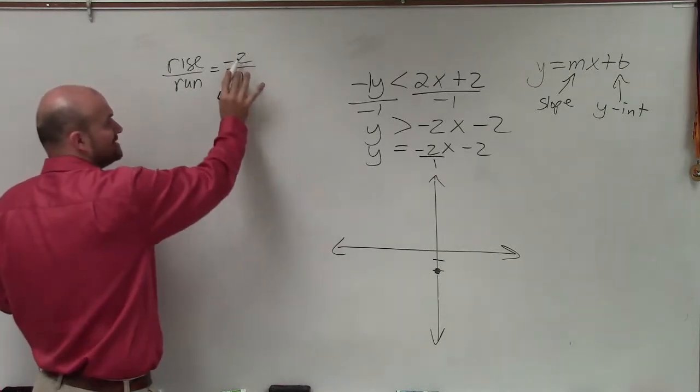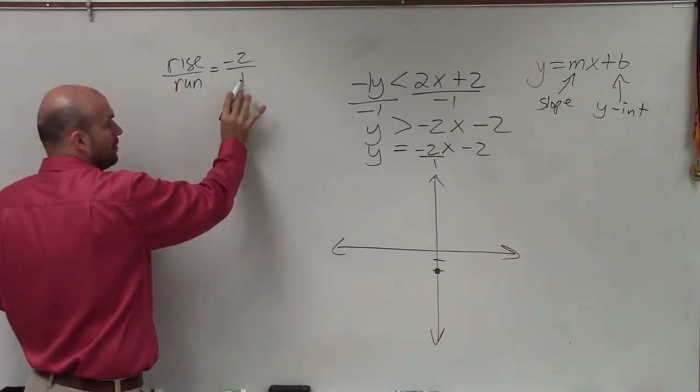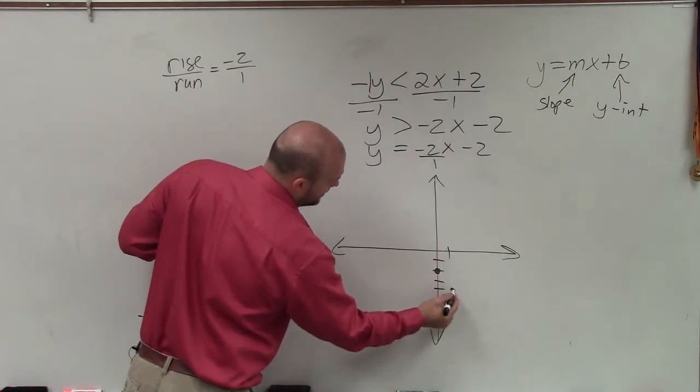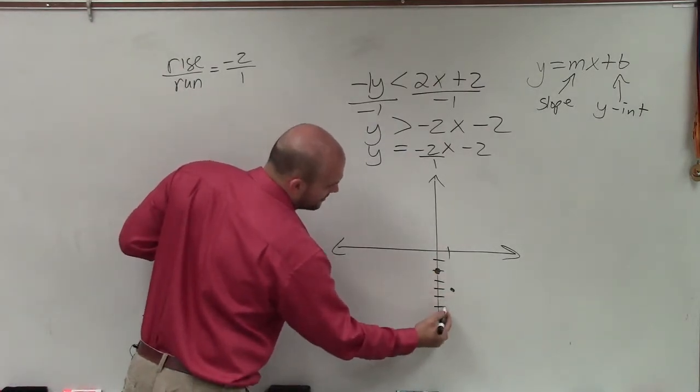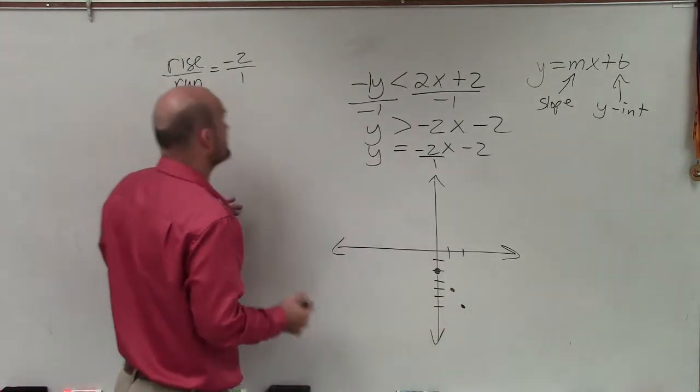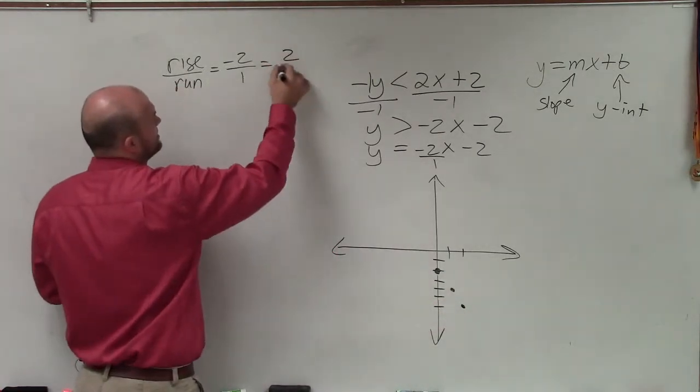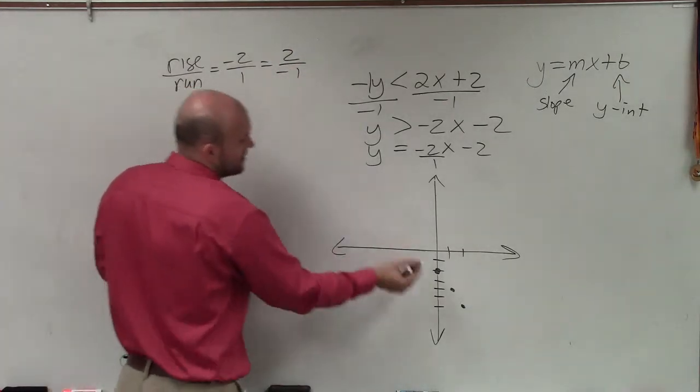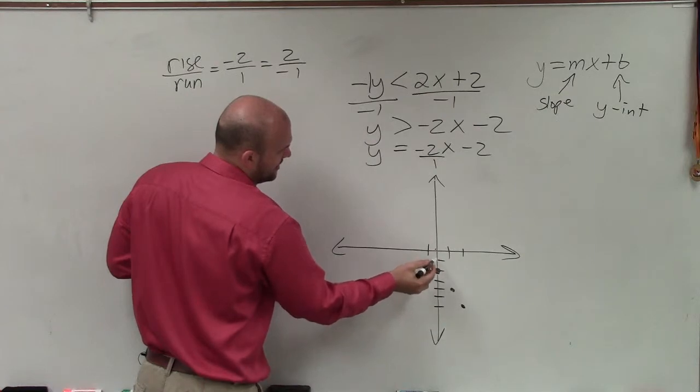That means to find my next point, I need to go down 2 over 1. So I can go down 2 units to the right 1. And you can just continue this pattern as many times as you want to, but you only really need to do it once. And just remember, you could also write this as 2 over negative 1. It doesn't really matter where the negative sign is. So that means I would rise 2 and then go to the left 1.